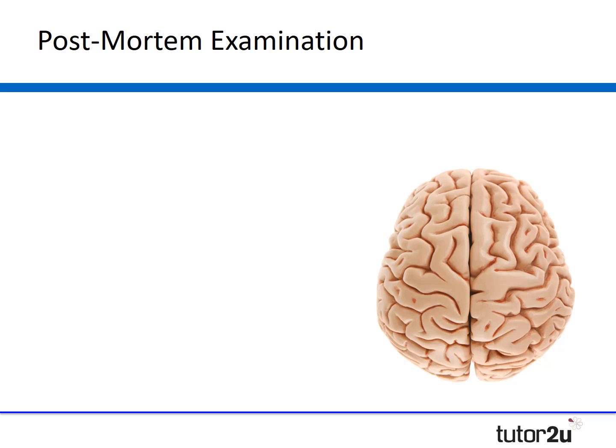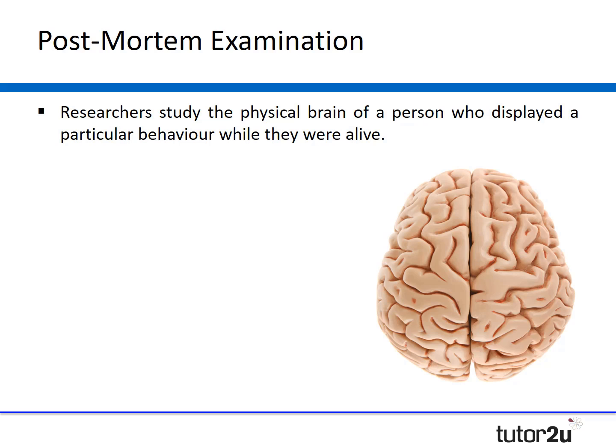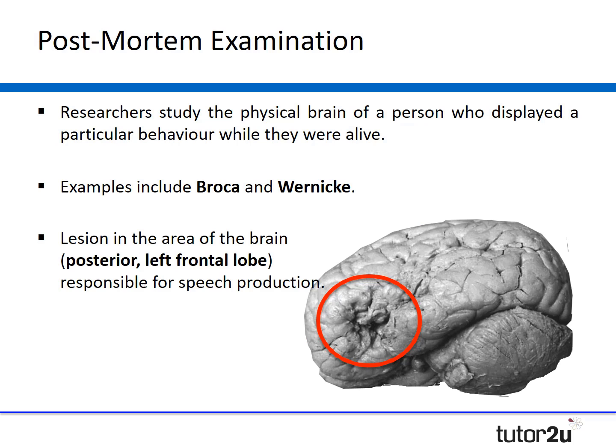The final method of investigating the brain is post-mortem examination, where researchers study the physical brain of a person who displayed a particular behaviour or characteristic during their lifetime that suggested possible brain damage. An example is the work of Paul Broca and Carl Wernicke, who examined the brains of men who displayed speech and language problems when alive. Paul Broca discovered that his patient — known as Patient Tan — had a lesion in an area of the brain important for speech production, located in the posterior left frontal lobe, which later became known as Broca's area.